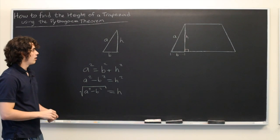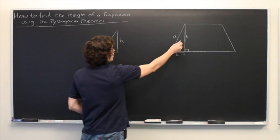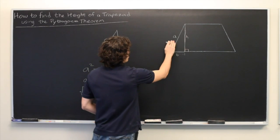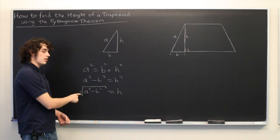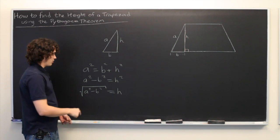And there we have it. If you want to determine the height of a trapezoid and you know these two pieces of information, all you need to do is calculate the square root of A squared minus B squared.